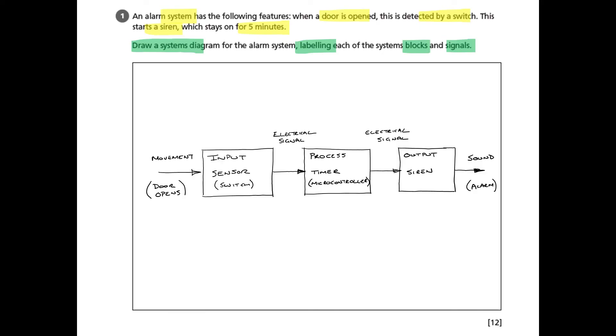So you can start to see that we've already built up quite a few marks already: understanding what a block diagram looks like, blocks with arrows between them, putting them in sequence, getting the input, the process, and the output in the right order. Then labeling the input, the process, and the output with the right sections - the switch, the microcontroller, and the siren. And then finally moving on to the signals. And those 12 marks add up very quickly.